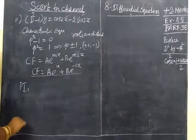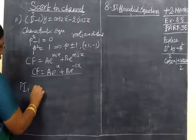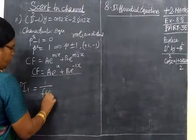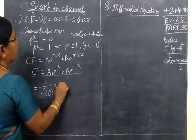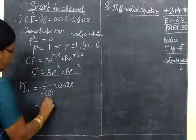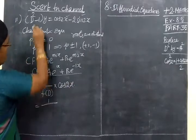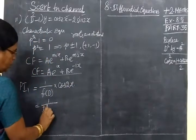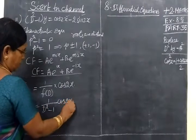Particular integral PI1 = 1/f(D) × cos2x, where f(D) = D² - 1. So we write 1/(D² - 1) × cos2x.